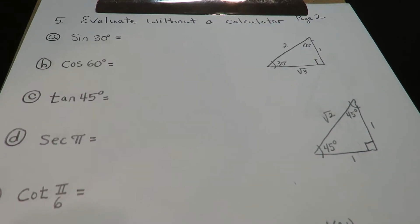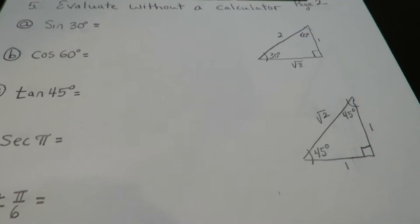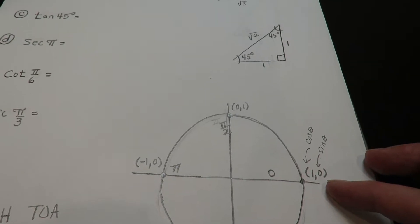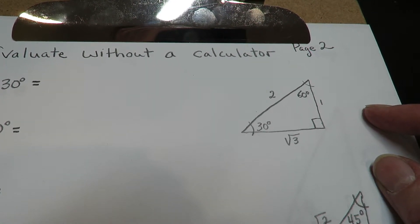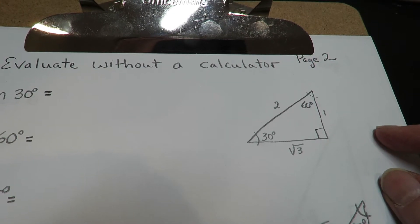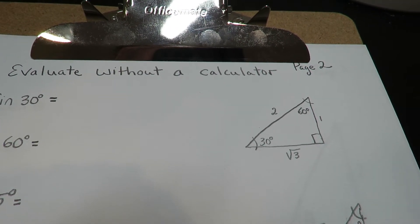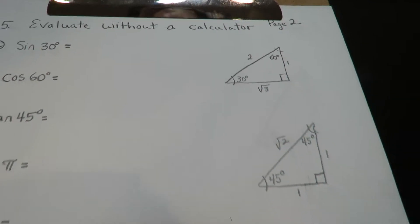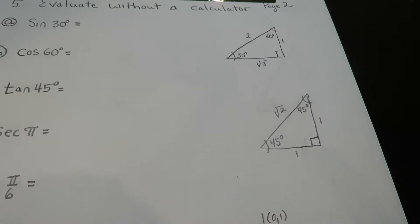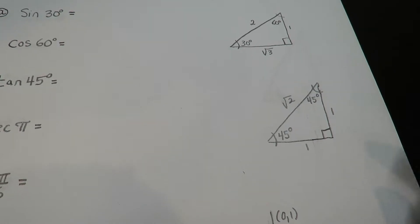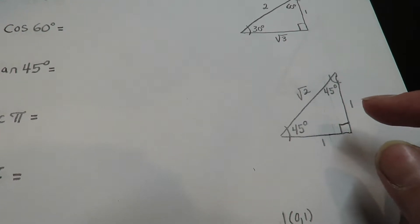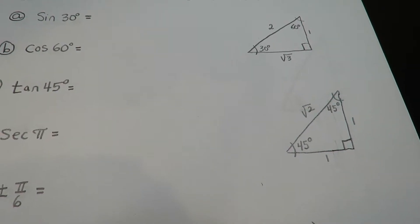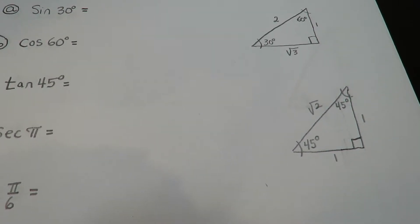The set of tools that we talked about in lecture was having two standard triangles and the unit circle. The first triangle, 30-60-90, we can use this one anytime we're trying to take the six trig functions and evaluate a 30 or a 60 degree angle. The second triangle, anytime we use the six trig functions, we can evaluate a 45 degree angle. So these two triangles are very good at evaluating a 30, a 45, or a 60 degree angle.